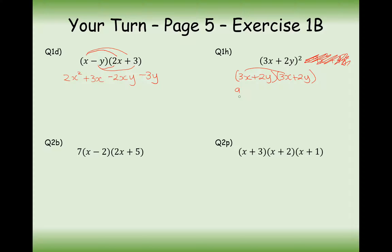So expanding what we get, we get 9x squared plus 6xy plus another 6xy and plus 4y squared. So this thing was nearly right, but we missed out this bit here. So your final answer simplifying the two middle components here is going to be 12xy plus 9x squared plus 4y squared.